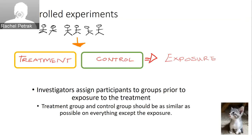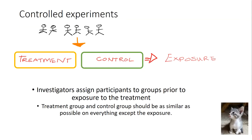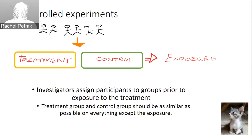Another important point is that the treatment group and the control group should always be as similar as possible on everything except the exposure. The variables we're most concerned about participants being similar on are potential confounding variables. These are often things like age, sex, and socioeconomic status, but they can be more nuanced as well.